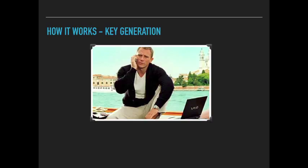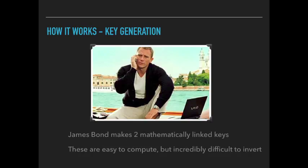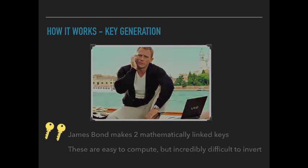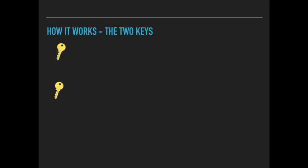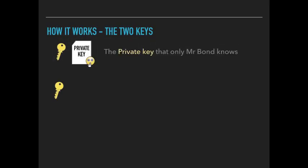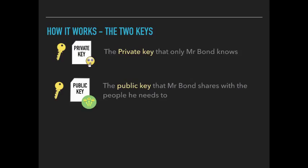How it works. First thing we do is generate a key. In this example, James Bond makes two mathematically linked keys. They are easy to compute, but incredibly difficult to invert. There is a private key — the private key that only Mr. Bond knows — and a public key that Mr. Bond shares with the people he needs to.